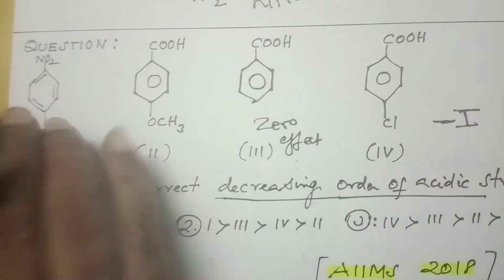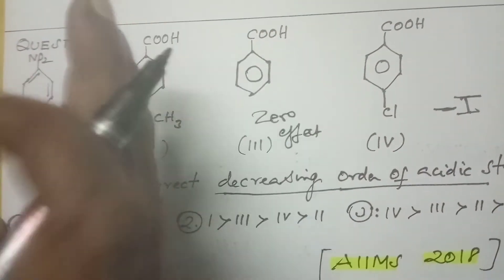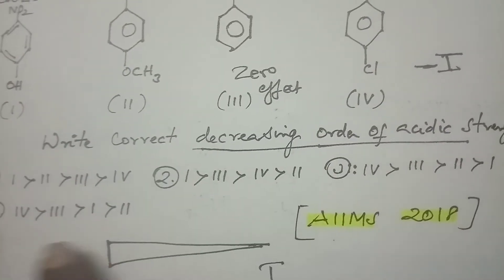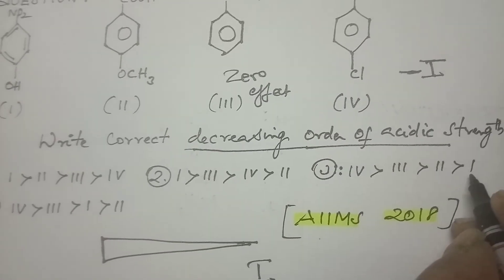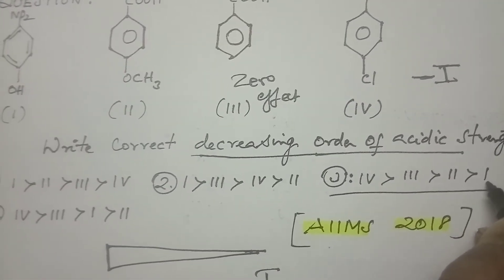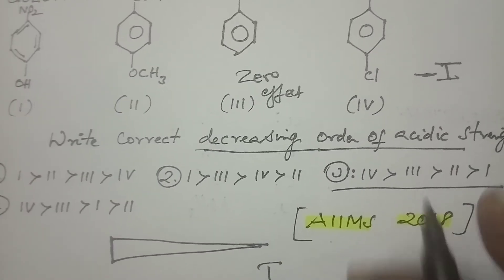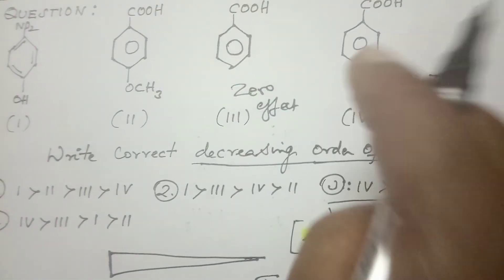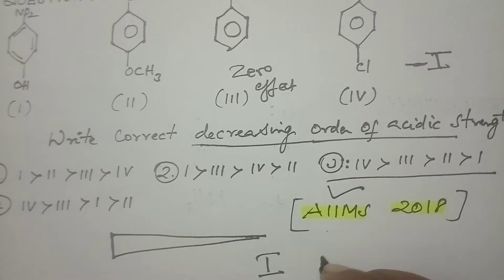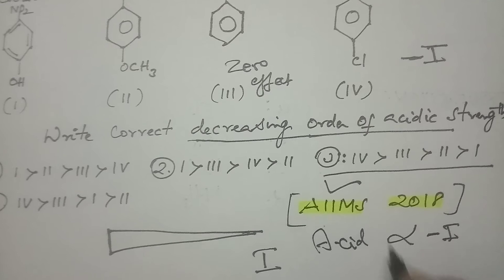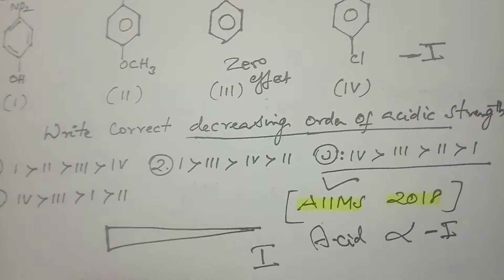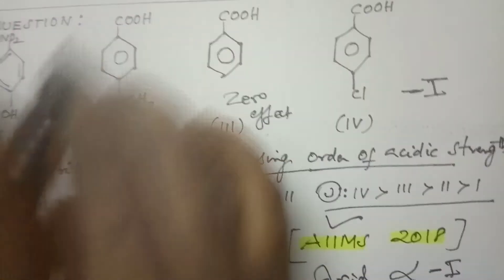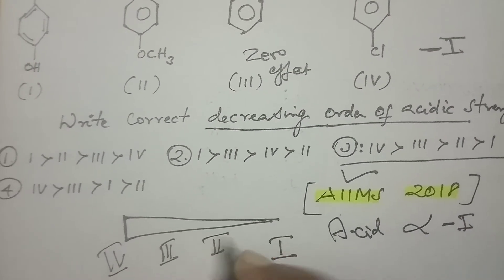Point one: phenol itself is comparatively less acidic. So this is the lesser acidic — put it at the last position. Roman numeral I is at the last. Find the option which has Roman numeral I as the last — you can see it here. Now, Roman numeral IV has an electron-withdrawing group. Acid strength is directly proportional to minus-I effect. Because of minus-I effect it is more acidic, so write Roman numeral IV first. Coming to the others: zero effect gives Roman numeral III, followed by Roman numeral II — electron-releasing makes it less acidic. This is the decreasing order.